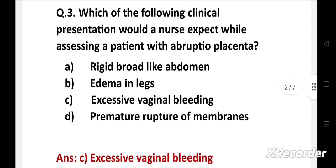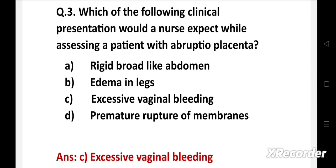The right answer is option c, excessive vaginal bleeding. Abruptio placenta is the premature separation of a normally located placenta from the uterine wall that occurs before delivery of the fetus. It is characterized by excessive vaginal bleeding, uterine tenderness, rapid contractions, abdominal pain, and fetal heart rate abnormalities.